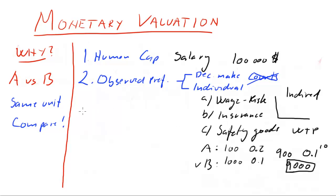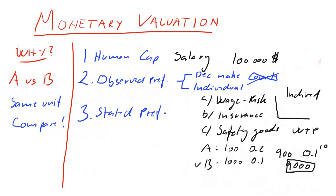There's a third method. If you don't have observed preferences — not even indirect ones — then you can use stated preferences. This is basically just asking people open-ended questions, such as: if you could reduce your risk of dying by 0.1%, how much would you be willing to pay? You have to be very careful how you design the question. This is called contingent valuation. You will sometimes get strange answers — people say they're willing to pay an infinite sum — so you must ensure people understand they actually have to pay, and can't pay more than they earn.